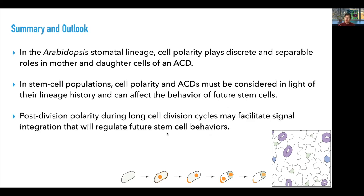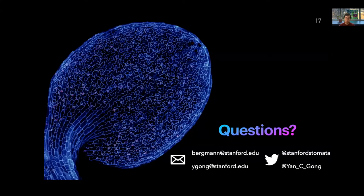Thinking about the long basal polarity after asymmetric cell division and the long cell cycle of plant cell divisions, we hypothesize that the basal polarity after asymmetric cell division would allow environmental factors to act on signaling molecules already scaffolded on the polarity crescent and to control stem cell behavior and lineage progression. Because of time, we don't have enough time to go into detail on this result — if you're interested, please check out our paper, specifically figure 5. With that, I would like to thank you for your attention and if you have any questions, feel free to reach out or ask us in the Q&A session.